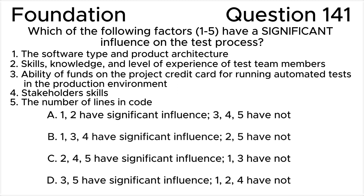Answers. A: 1 and 2 have significant influence; 3, 4, 5 have not. B: 1, 3, and 4 have significant influence; 2 and 5 have not. C: 2, 4, and 5 have significant influence; 1 and 3 have not. D: 3 and 5 have significant influence; 1, 2, and 4 have not.